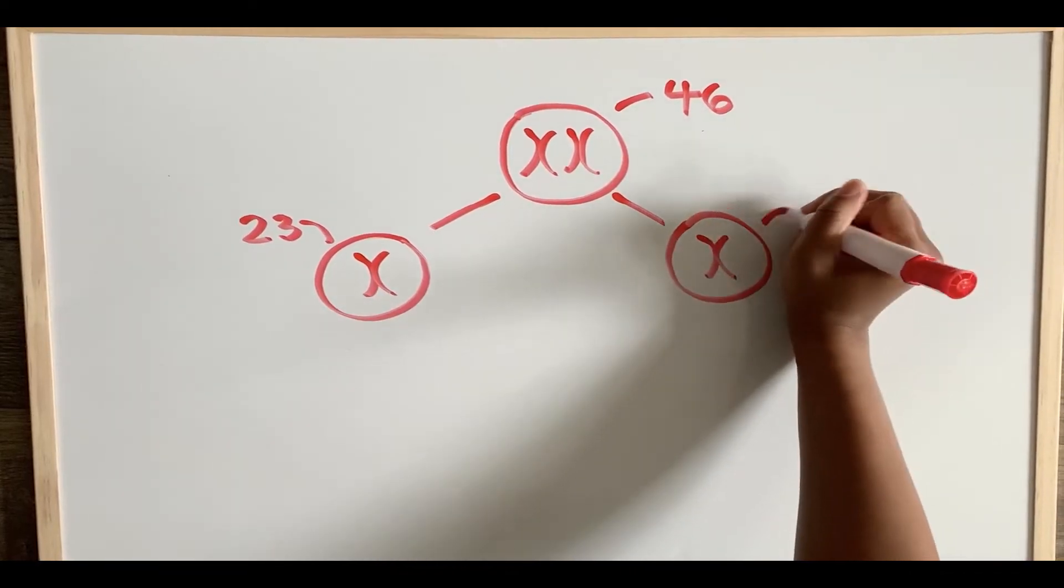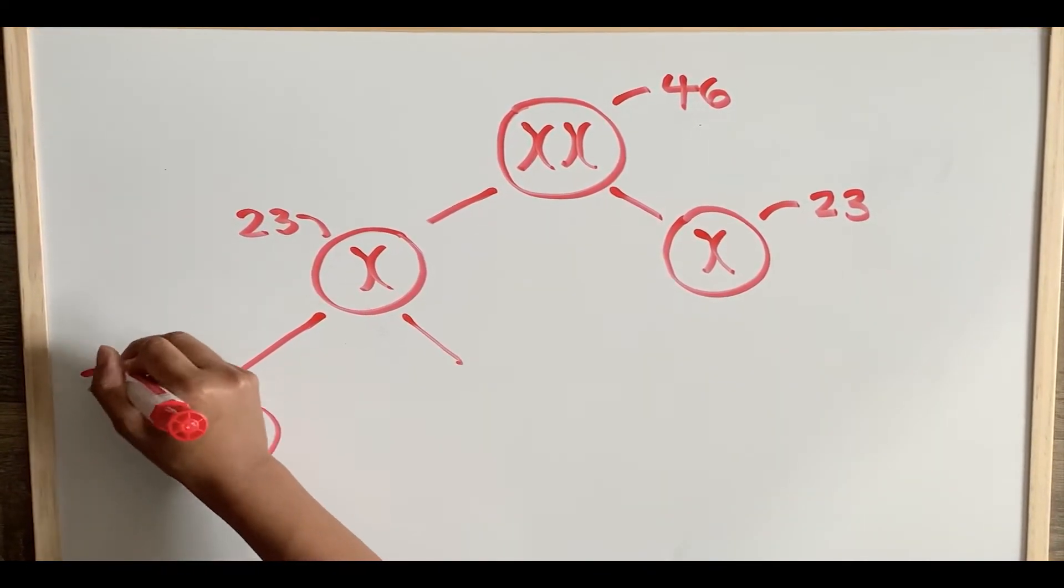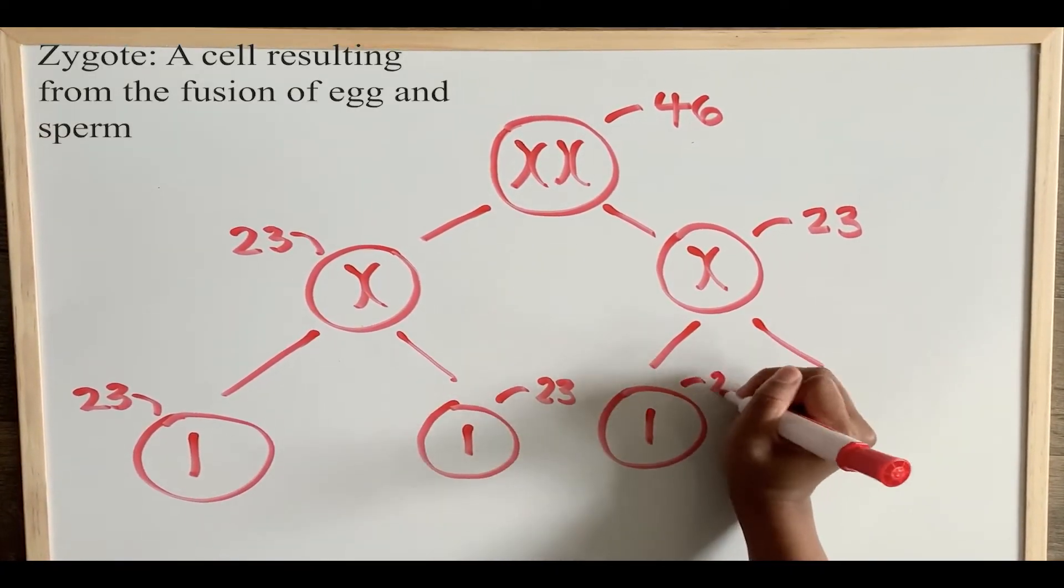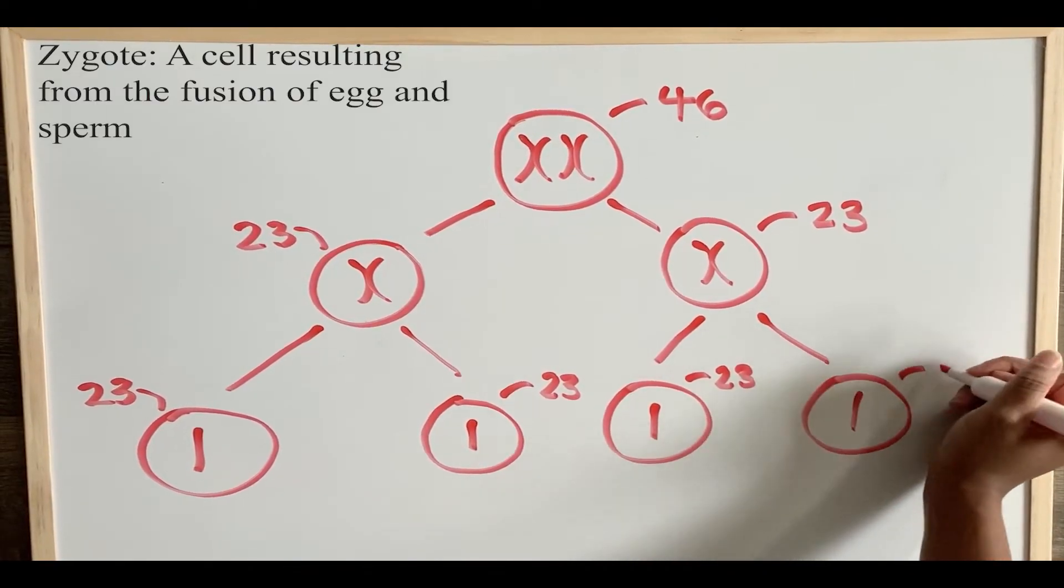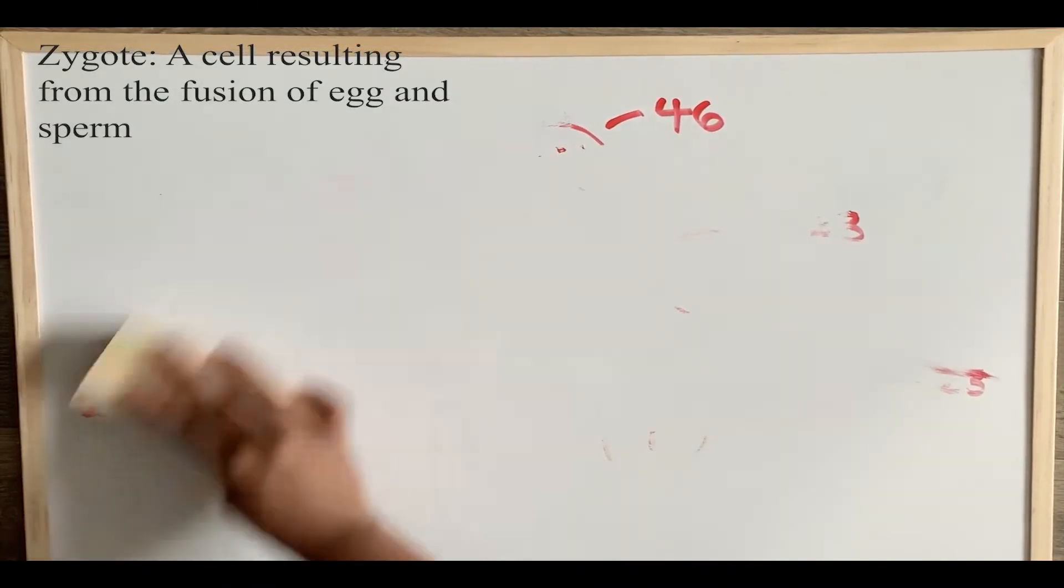This is because an egg and sperm combine during fertilization, and the 23 chromosomes from each gamete together form a zygote, with 46 total chromosomes that will develop into a human being.